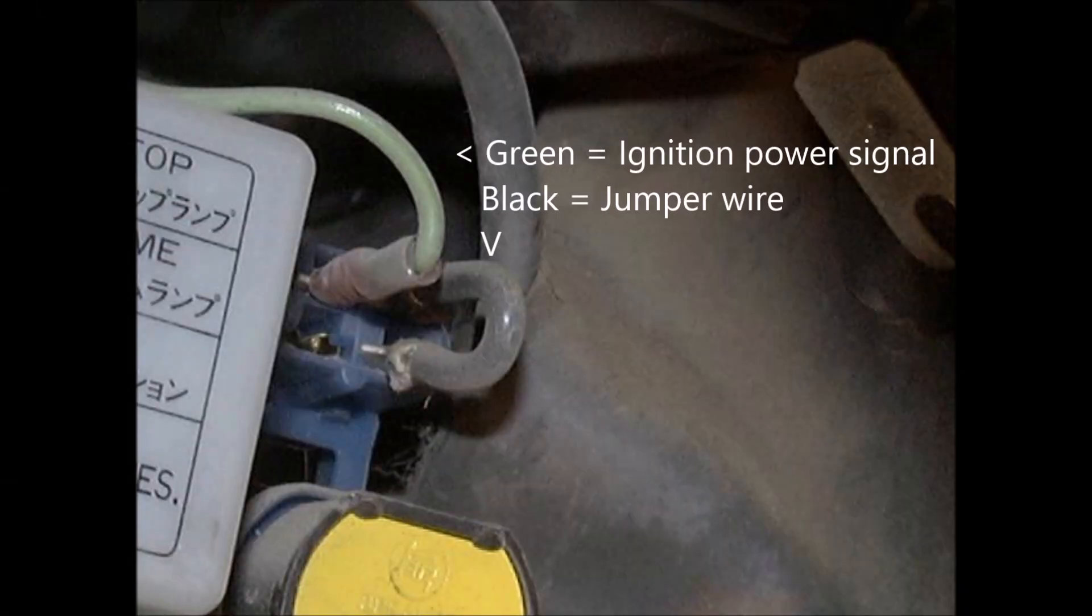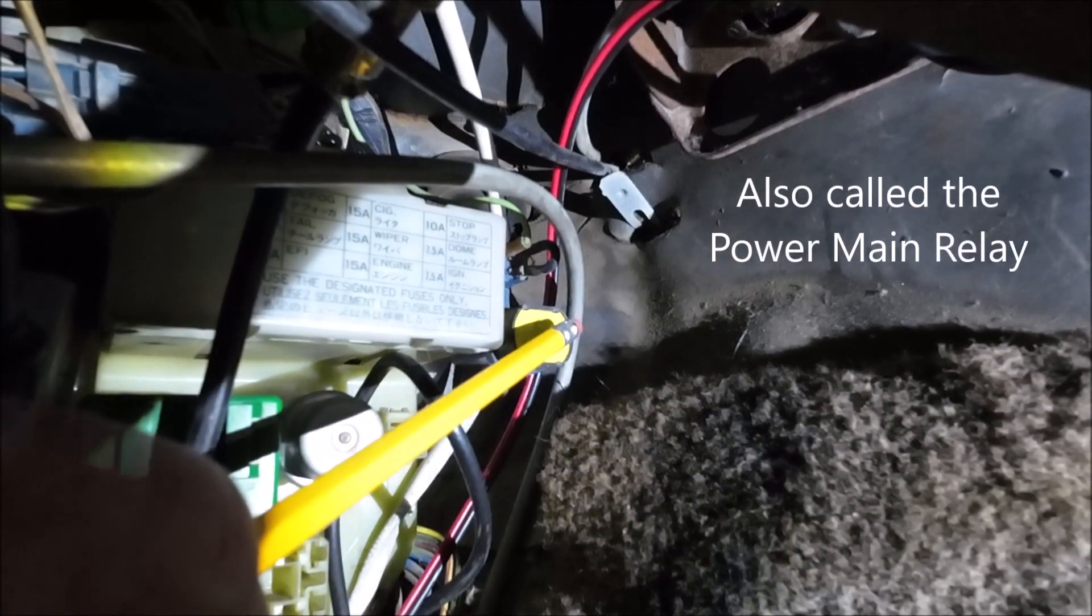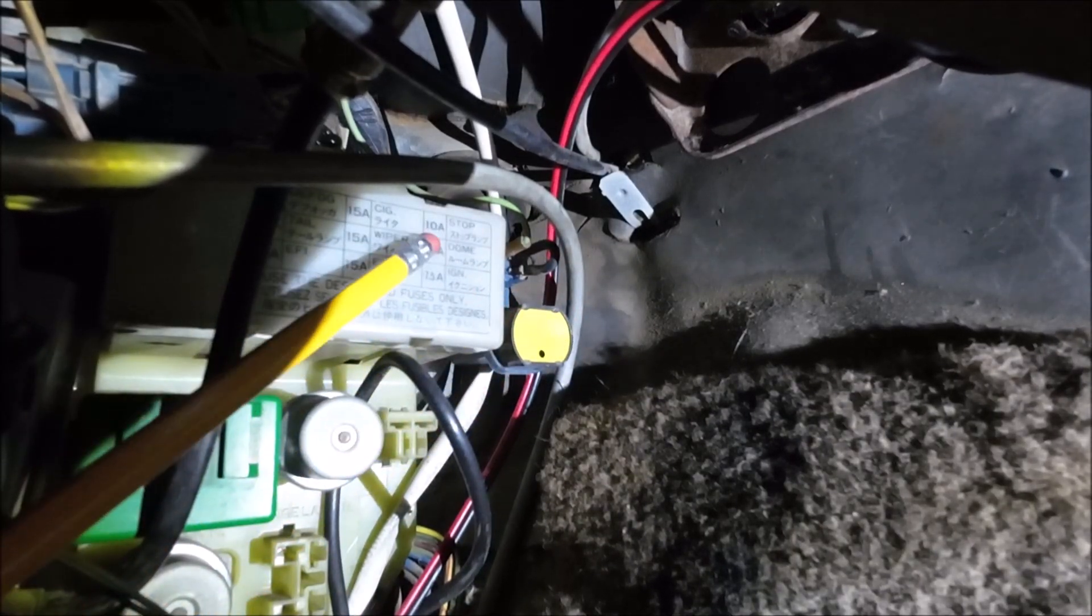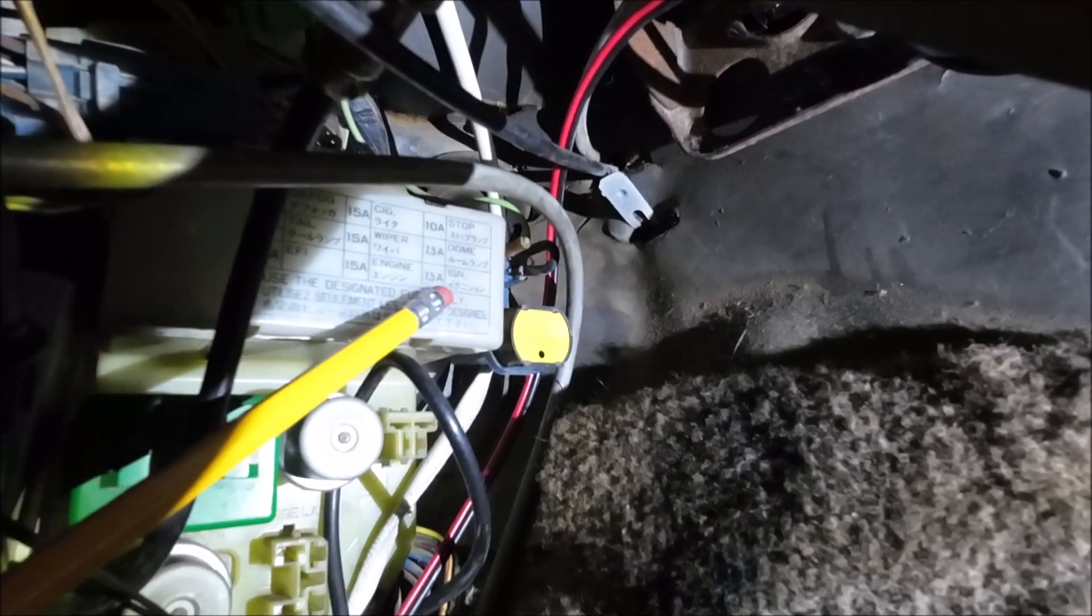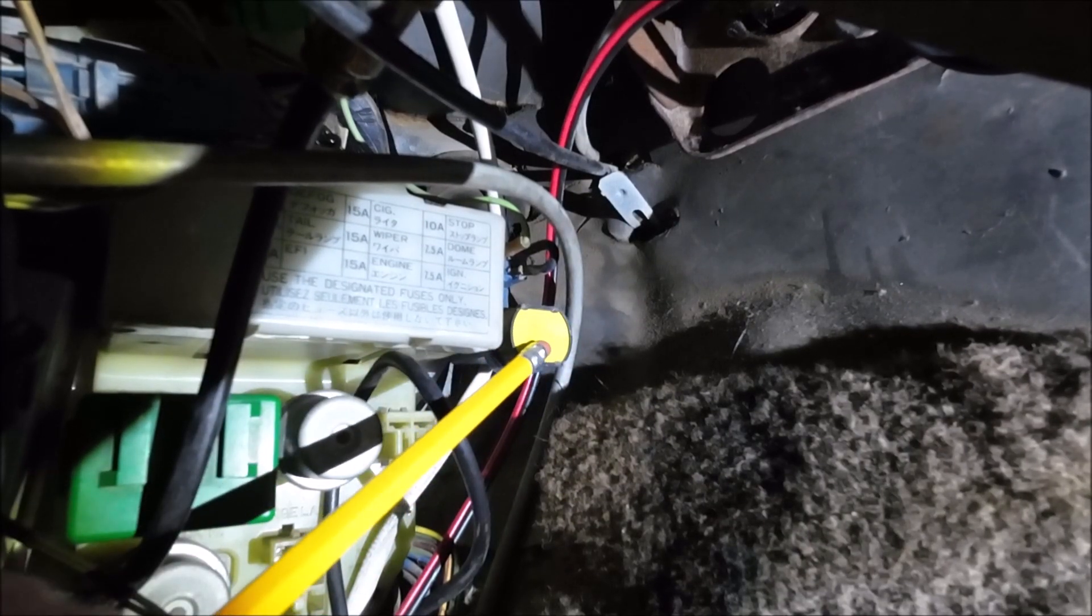Normally that is a relay, the power window relay, and it's right next to this fuse block here. There's a bunch of fuses, this is the circuit breaker for the power windows. It's a four pin relay.